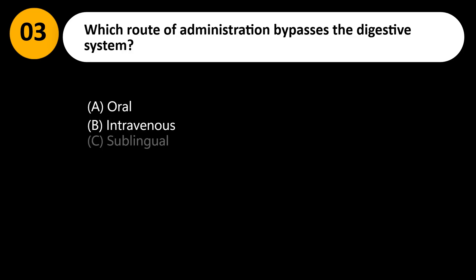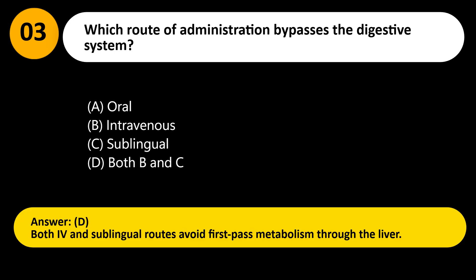Which route of administration bypasses the digestive system? A. Oral. B. Intravenous. C. Sublingual. D. Both B and C. Answer: D. Both intravenous and sublingual routes avoid first-pass metabolism through the liver.